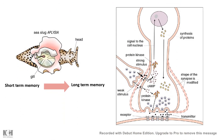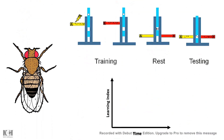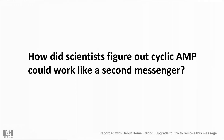Eric Kandel has shown that conversion of short-term memory to long-term memory involves cyclic AMP elevation and mobilization of protein kinase A into the nucleus, and thereby gene transcription programs. It has also been seen in fly mutants where cyclic AMP production is hampered, their learning index decreases dramatically. So cyclic AMP is important in learning, memory, and many physiological processes.